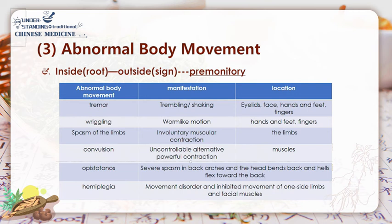These chiefly include tremors, writhing, spasms of the limbs, contralateral hemiplegia, and so on. These special movements are the outside signs; the root is in the inner organs. Each time you see changes on the outside, take it as a signal, and mix it with other signals from other diagnostic methods — it will become the light guiding you forward.